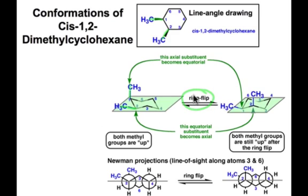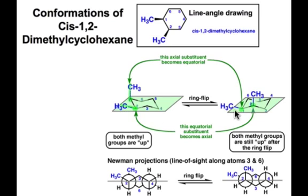Upon ring flipping, the methyl group in the axial conformation on carbon atom 1 becomes equatorial, and the one that was equatorial on carbon atom 2 becomes axial. But the most important thing to notice is that both methyl groups were heading up on the left-hand side, and after the ring-flip process, both of them still point up relative to the plane slicing through the middle of the ring.